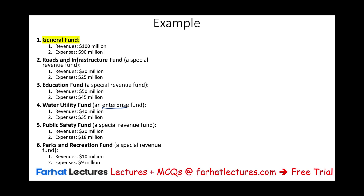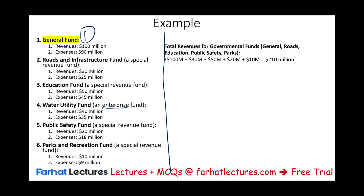Now we need to determine which funds are considered major funds and must be reported separately. The general fund will definitely be reported separately regardless of its size. Next, we total the revenues for governmental funds: general, roads, education, public safety, and parks — we exclude the water utility because that's an enterprise fund. Adding up those revenues: $100M + $30M + $50M + $20M + $10M = $210 million. Then we add up revenues for all funds: $210M plus $40M for the water utility = $250 million.